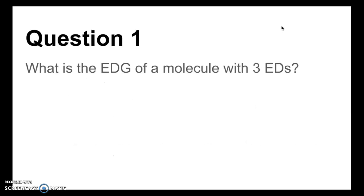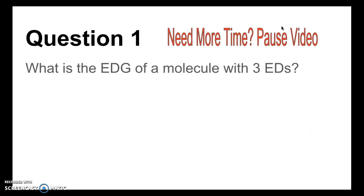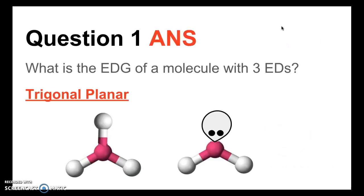Question 1. What is the electron domain geometry of a molecule with three electron domains? The answer is trigonal planar. Remember that the electron domain geometry describes the arrangement of all electron domains, whether they are from bond pairs or lone pairs. So in both of these structures, because they have three electron domains around them, they will still have the same electron domain geometry, which is trigonal planar.